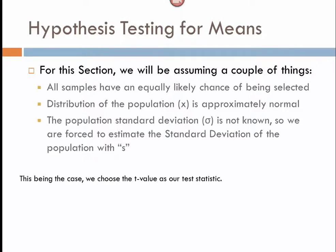In this case, we're using the T value as our test statistic, but basically the formula remains the same. S is used instead of sigma, and that's really the only difference here. We're also calling it a T.